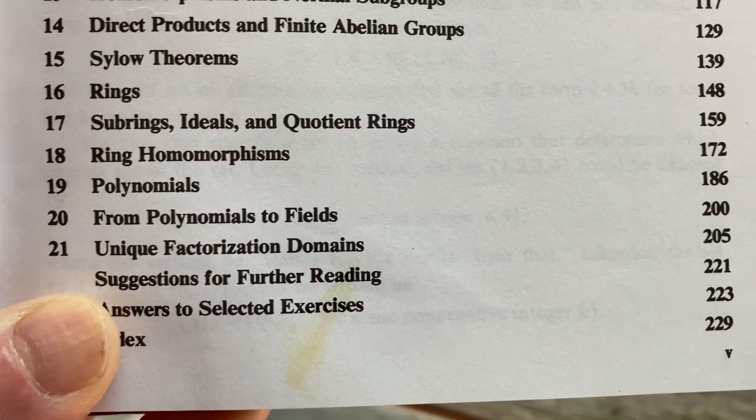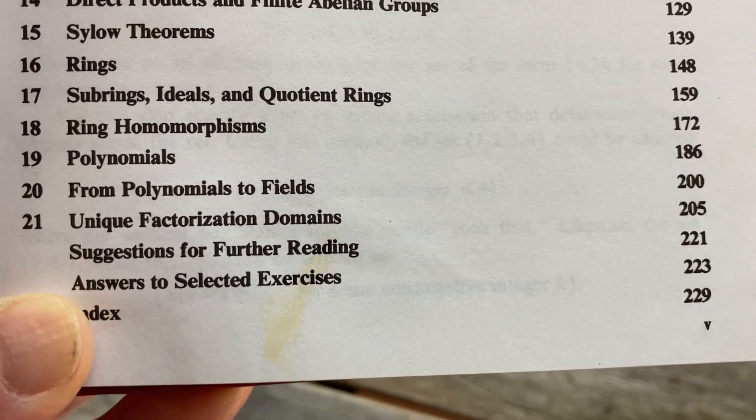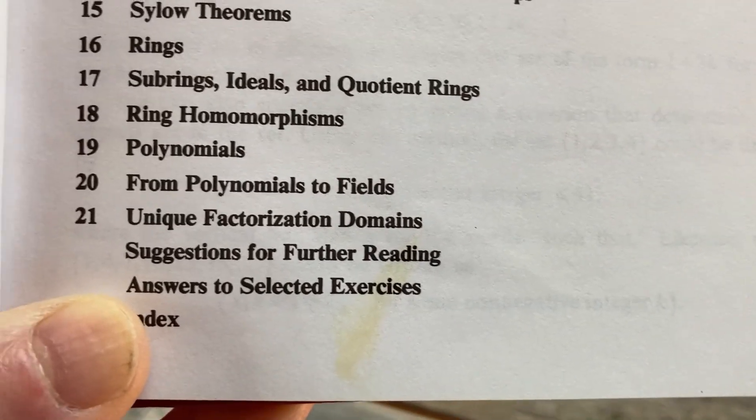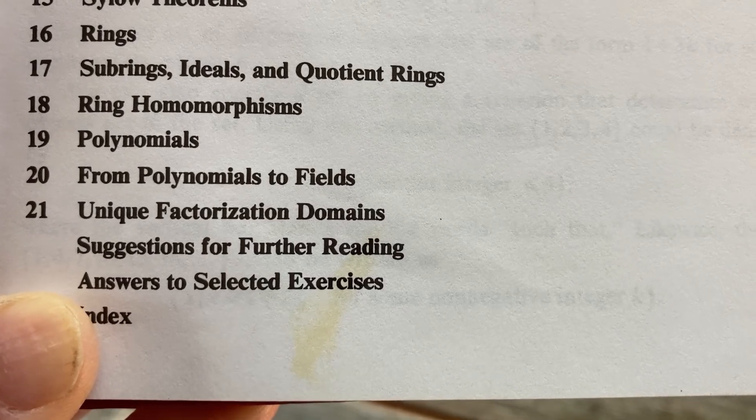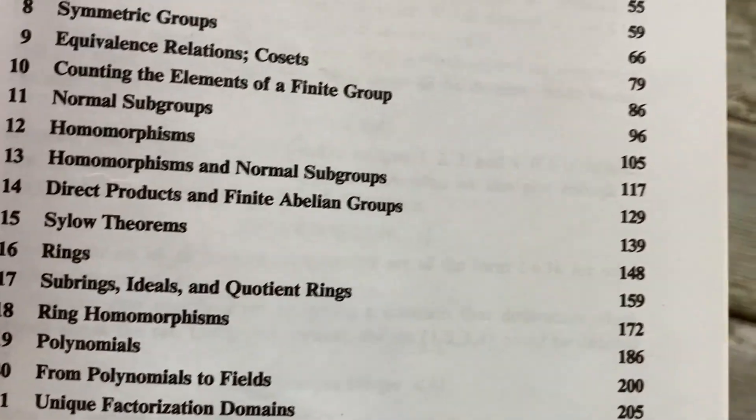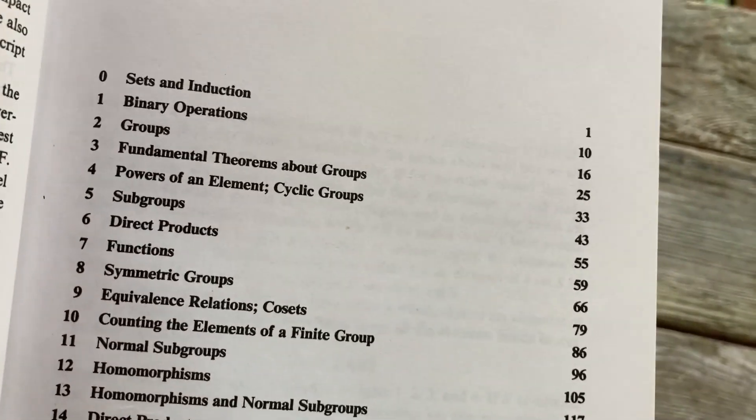Some ring homomorphisms, some content with polynomials, and it talks about transitioning from polynomials to fields. Then it talks about unique factorization domains. It has answers to some of the exercises, but it does lack content compared to a lot of other beginner books.